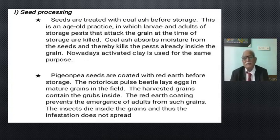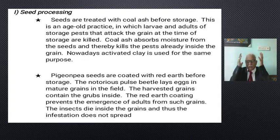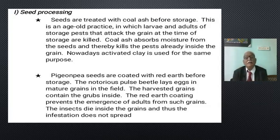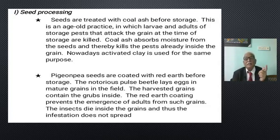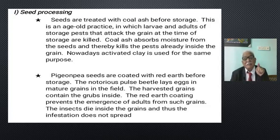Regarding seed processing: in ancient times, in the absence of high-level technology, seeds were treated with coal ash before storage. This is an age-old practice in which larvae and adults of storage pests that attack the grain are killed. Coal ash absorbs moisture from the seeds, thereby killing the pests already inside the grain. Nowadays, activated clay is used for the same purpose. Similarly, pigeon pea seeds are coated with red earth — a practice with a very good advantage, as the notorious pulse beetle lays eggs in mature grains in the field and the harvested grains contain grubs inside. The red earth coat prevents the emergence of adults, so the insects die inside the grains.